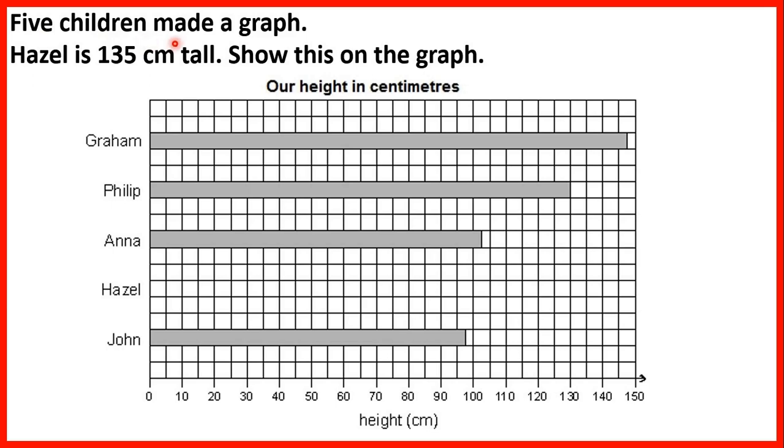Five children made a graph. Hazel is 135 cm tall. Show this on the graph. So on the graph, we have 130 and 140. So 135 will be the line in the middle, because that's 5 more than 130 but 5 less than 140. So we need to make sure that Hazel's bar stops at this point here, because that's 135.